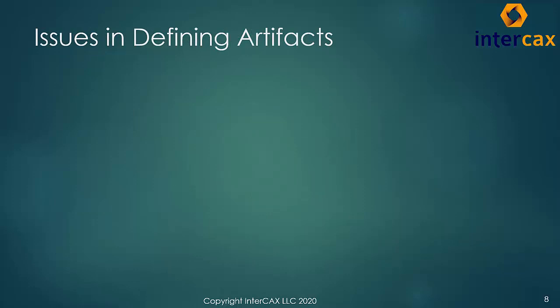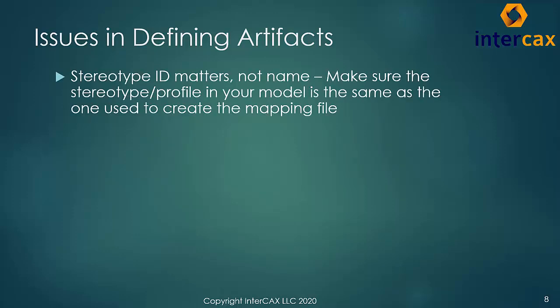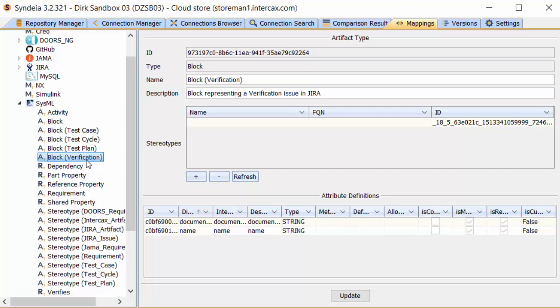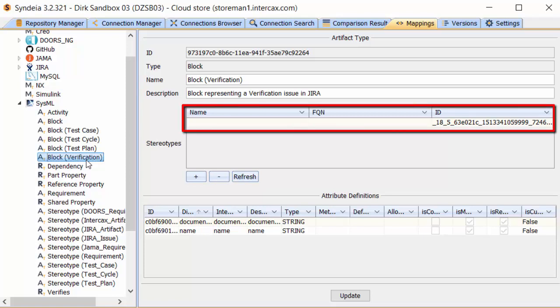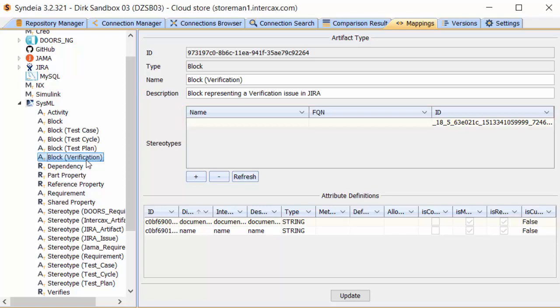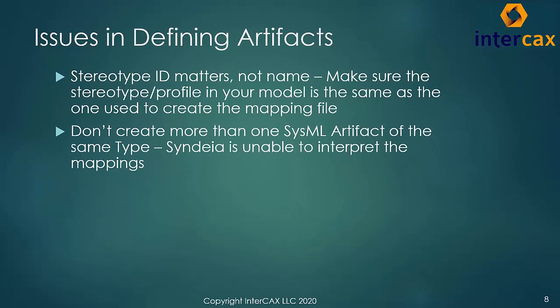In addition to this major option, there are other troubleshooting issues in defining SysML artifacts. First, Cyndia recognizes artifacts by ID, not name. If your SysML model does not have the stereotype used in a mapping or artifact definition, or it has a stereotype of the same name but a different ID, your mapping window will show the stereotype name as blank, and the mapping will not work. It is good practice to distribute your Cyndia.mappings file and your special stereotypes profile together to other users. Avoid creating more than one artifact of the same type-stereotype combination.